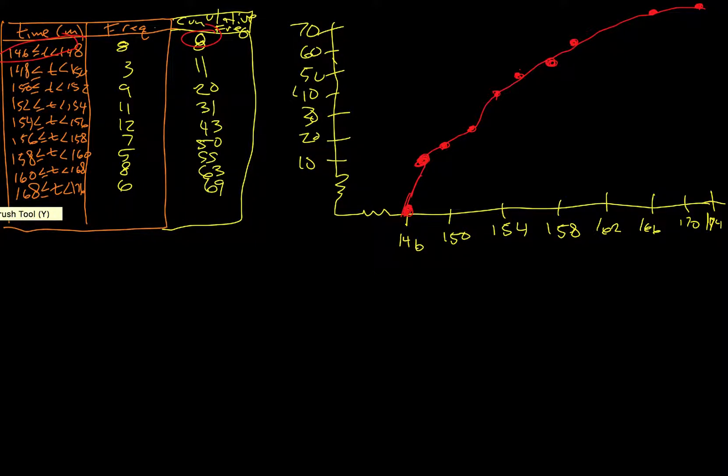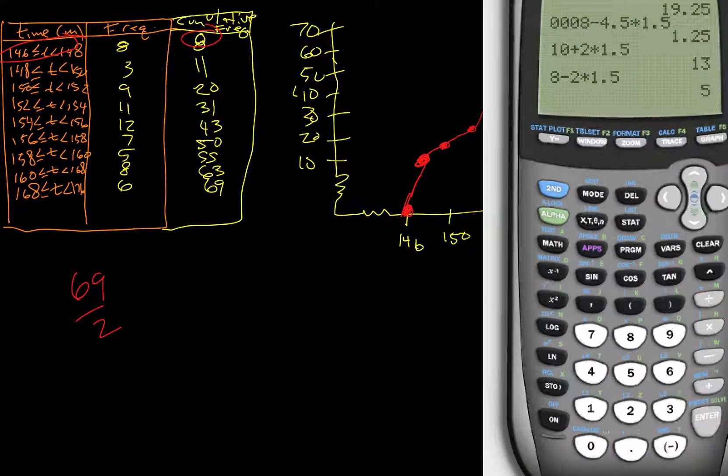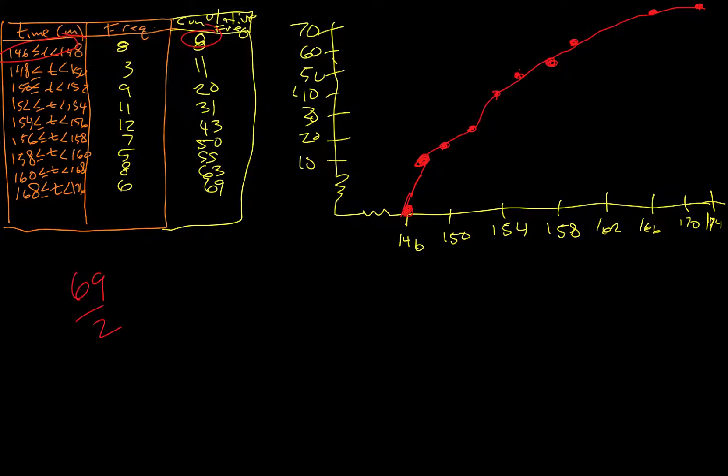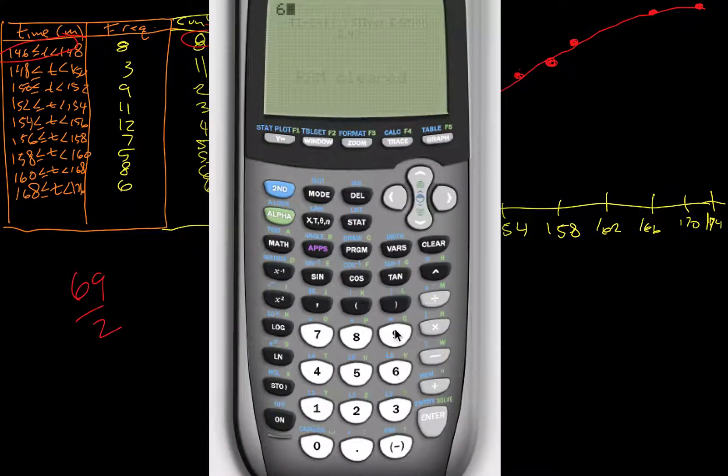Now part C has multiple parts, so use your graph to estimate the median finishing time. To do that, we want to cut our total in half. So we did 69 divided by 2. Come on your calculator and just do 69 divided by 2. So we get 34.5.